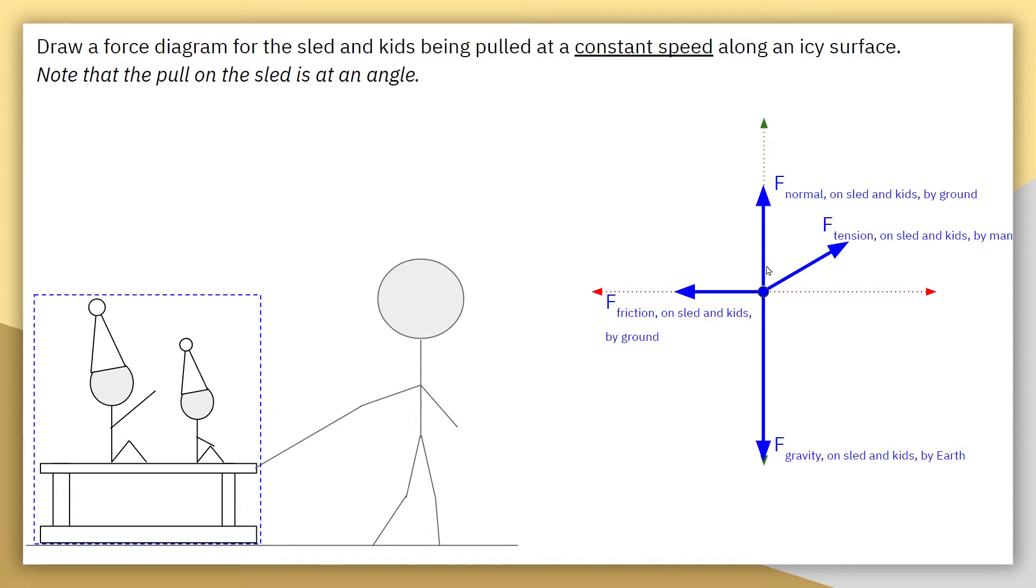Right now, we have some amount of that force tension applied upwards. Because we have no acceleration up or down, that means that all of the downward forces need to be balanced out by all of the upward forces.